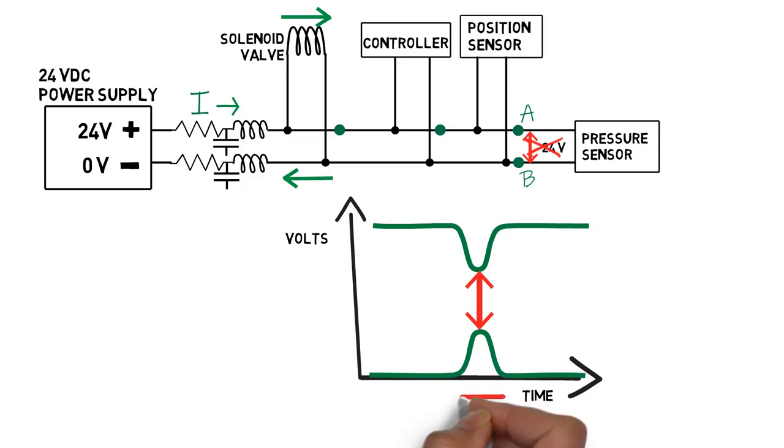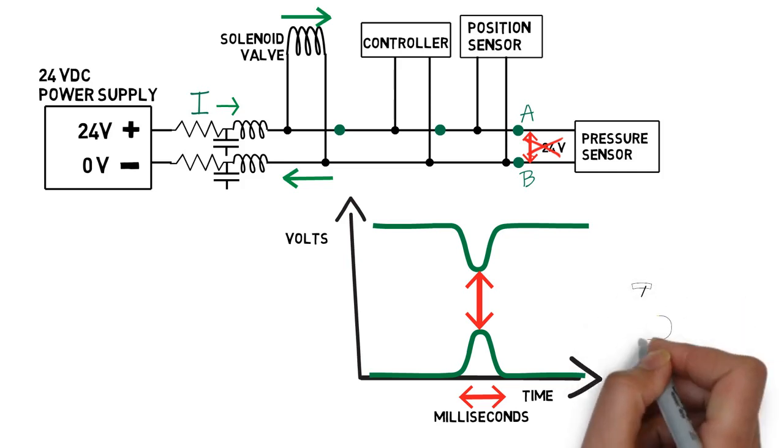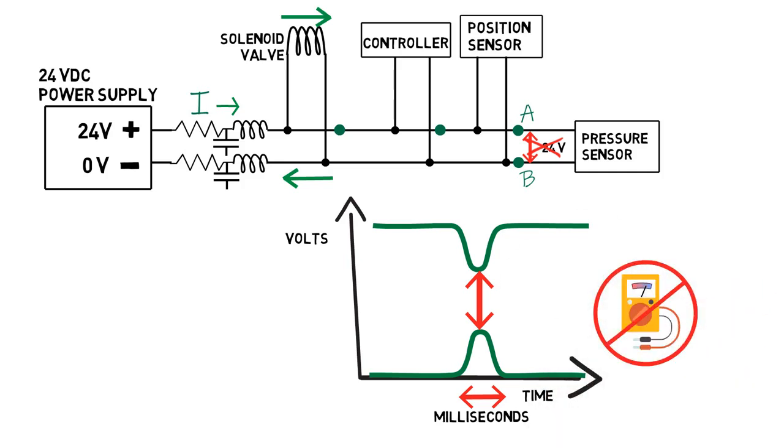This normally happens very quickly, such as in 50 milliseconds, and requires an oscilloscope to see it. Normal multimeters will not catch this, since they are much too slow.